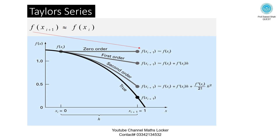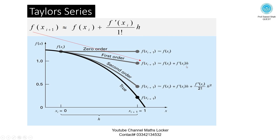Here is a graph of the Taylor series. If you are taking a single term, f of x i plus 1 is approximately equal to f of x i — this is the zero order function. If you are taking two terms, f of x i plus 1 is approximately equal to f of x i plus f dash of x i times h — this is a first order function.